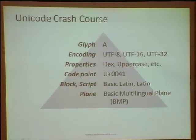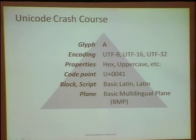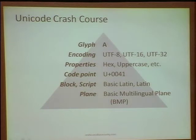Unicode is a pretty old standard and there's a lot to it. When you look at a character — the glyph, the letter A — there's a lot of stuff it takes to support that character in Unicode. Underneath you've got encodings, properties, metadata. Every character has a code point, scripts assigned to it, and a plane that it lives in. Most characters I'm concerned about live in the basic multilingual plane, which is U+0000 through U+FFFF. There are actually 17 planes in total.